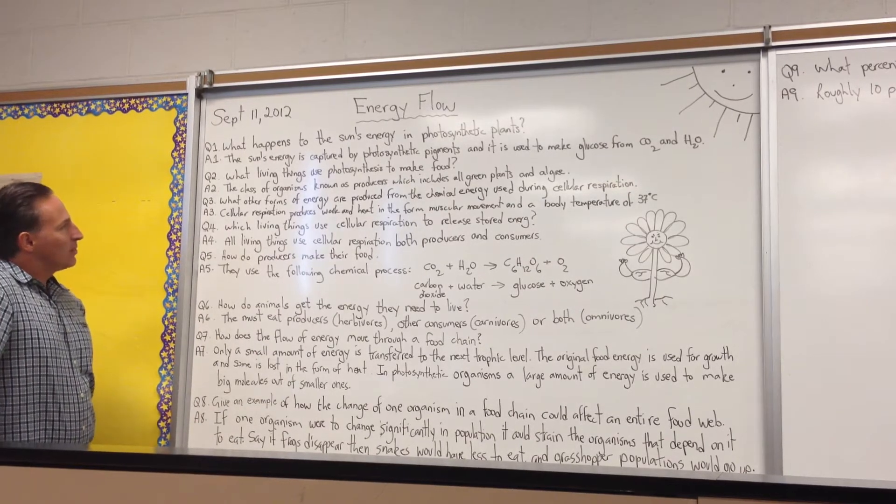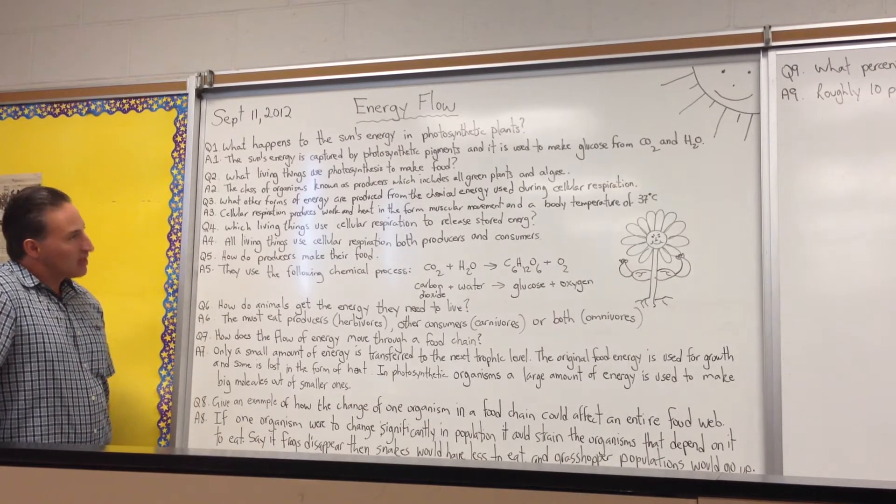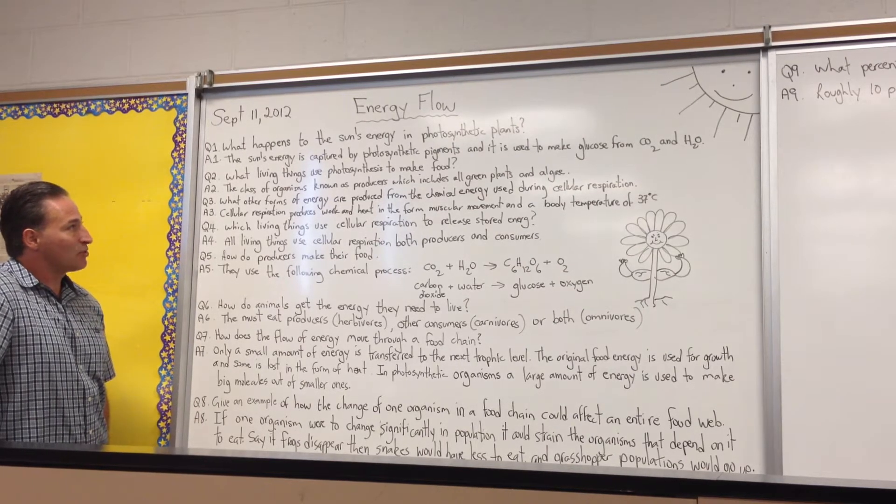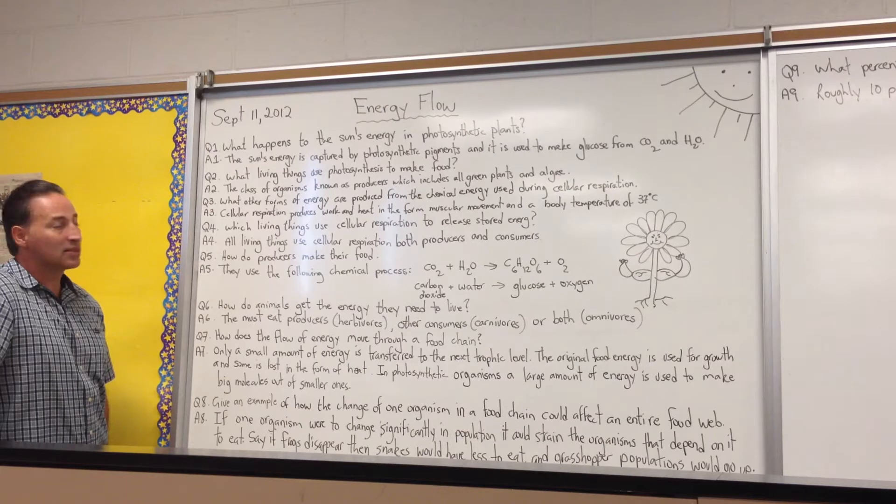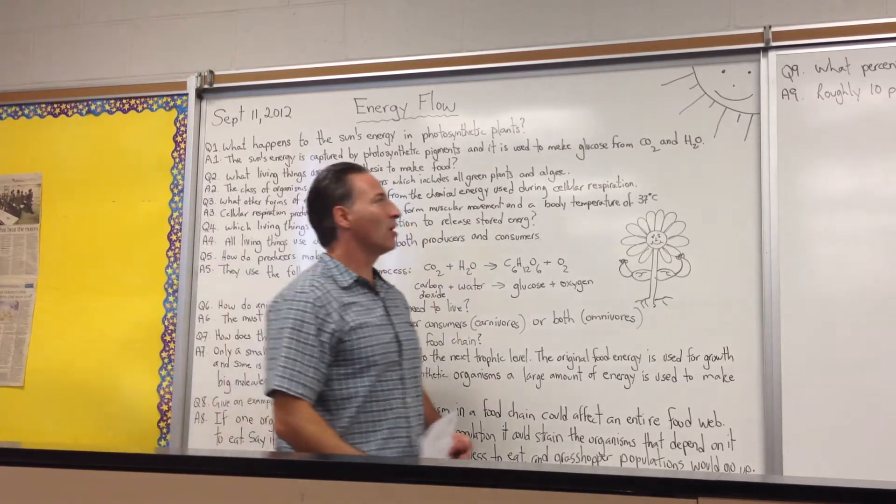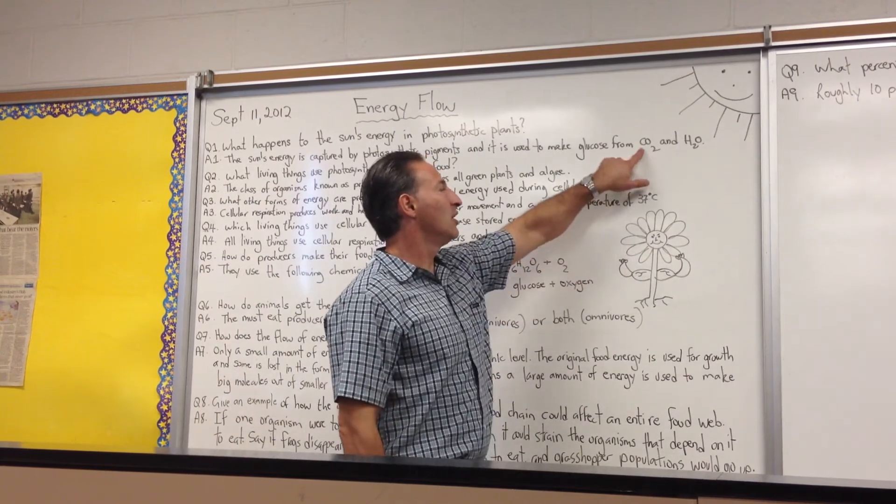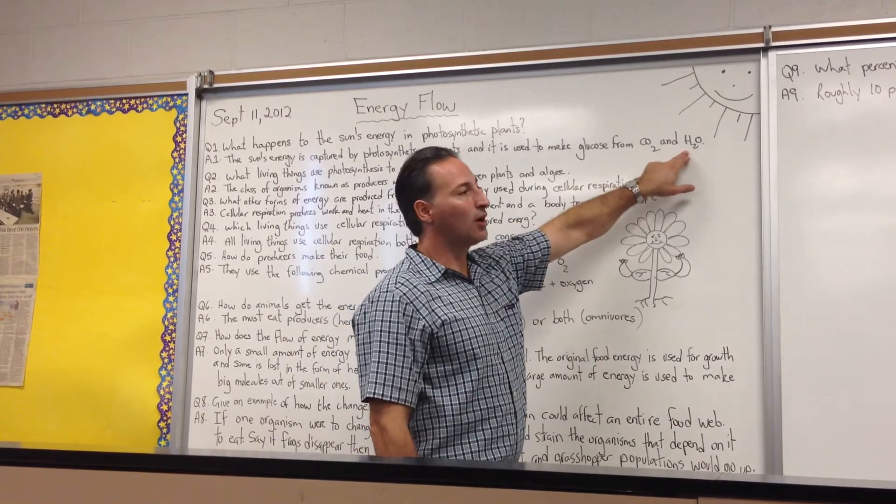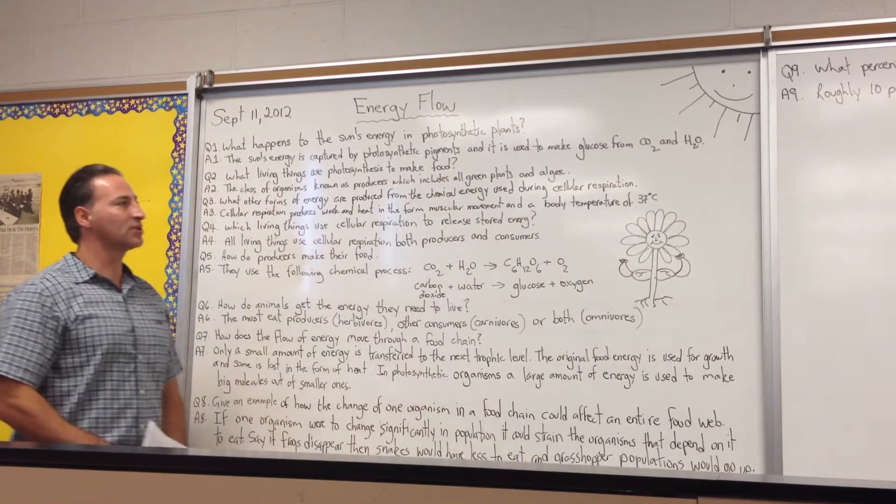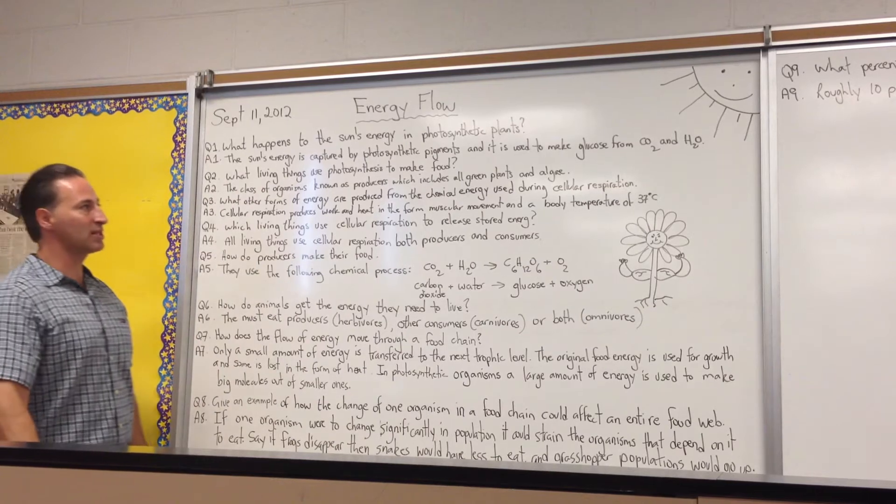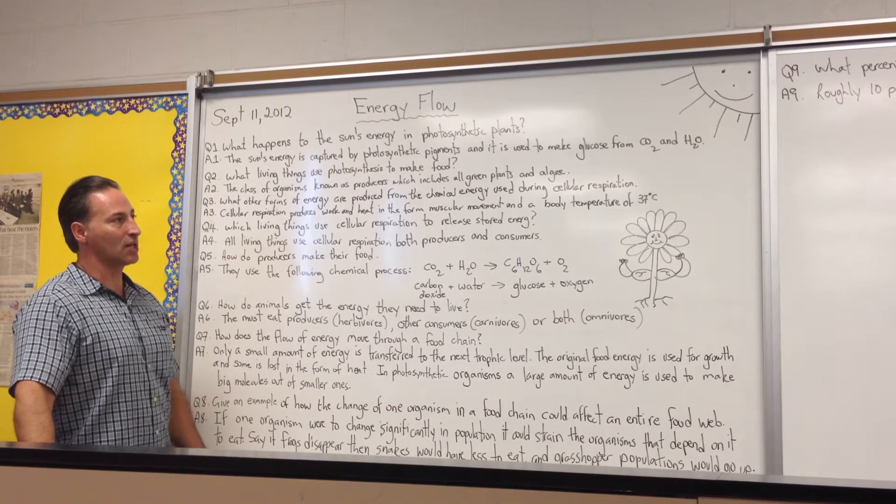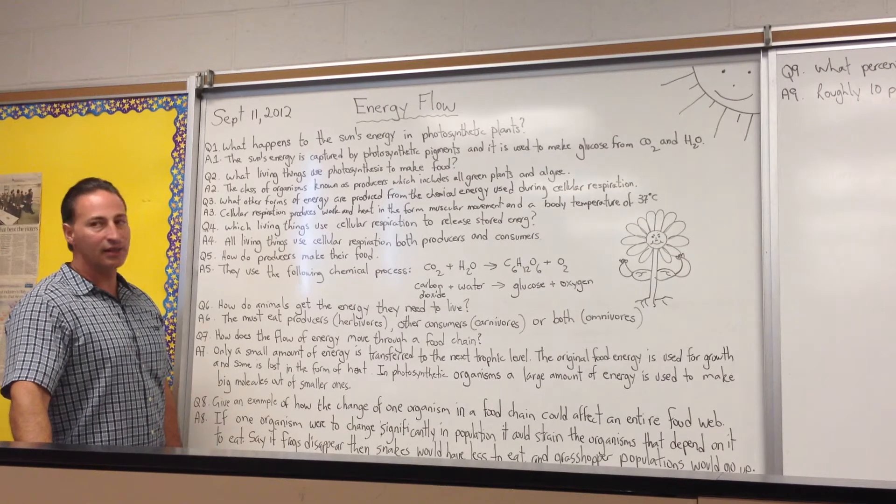So, the first question is, what happens to the sun's energy in photosynthetic plants? And the answer to that question is the sun's energy is captured by photosynthetic pigments like chlorophyll and it is used to make glucose from carbon dioxide and water. Plants capture the carbon dioxide from the air. They get water from the roots. They draw it out of the soil. And they combine those two chemicals to make glucose. They make simple sugars which are then combined to form different things like starch or cellulose or lignin in the case of trees.